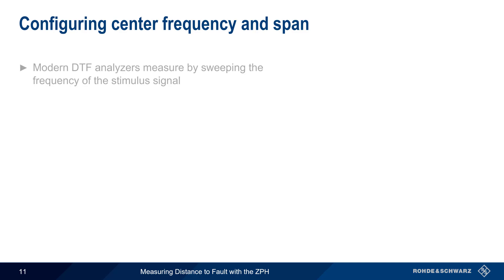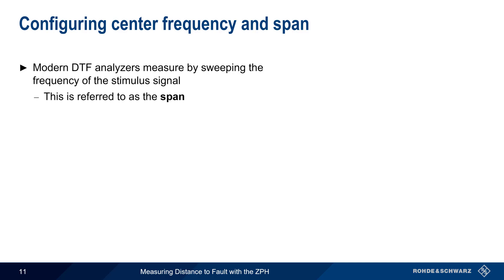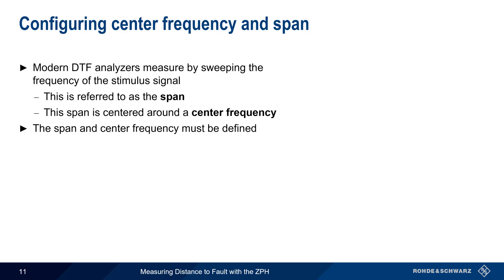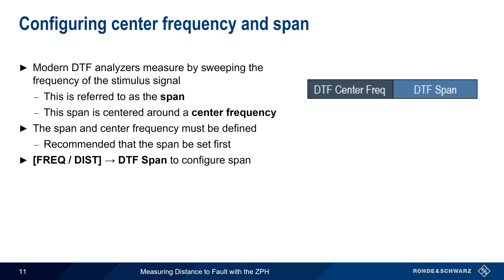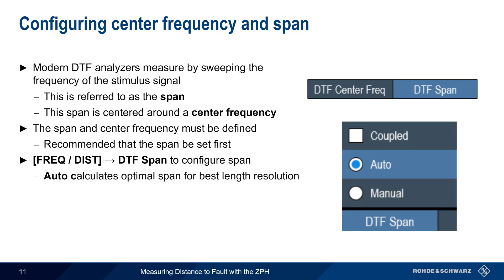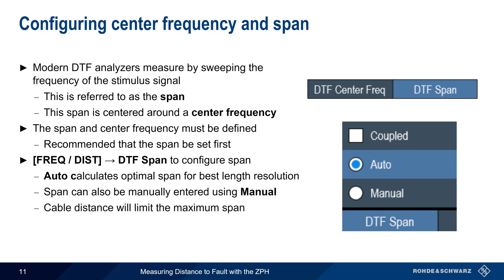Modern distance to fault analyzers measure by sweeping the generator over a frequency range, and this range is referred to as the span. This span in turn is centered around a center frequency. The span and center frequency must be defined, and in DTF measurements, the recommendation is to set the span first. Span is configured by pressing the Frequency Distance hard key, and then DTF Span. In most cases this can be left as Auto, which calculates the optimal span for the best length resolution, although span can also be manually configured. After span has been configured, use DTF Center Frequency to set the center of the span.